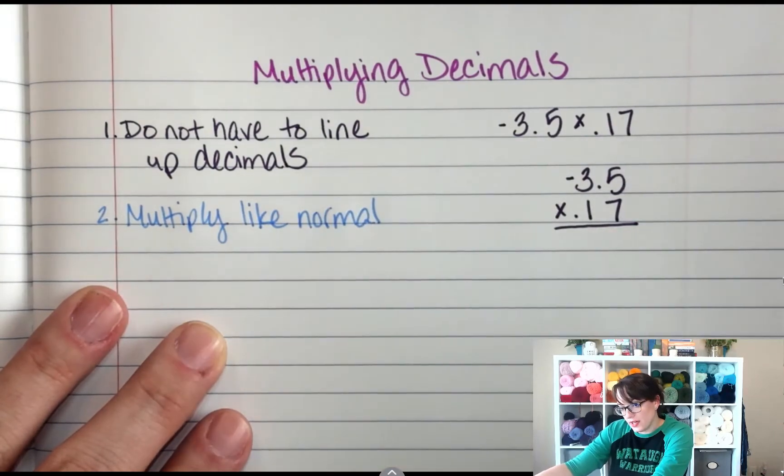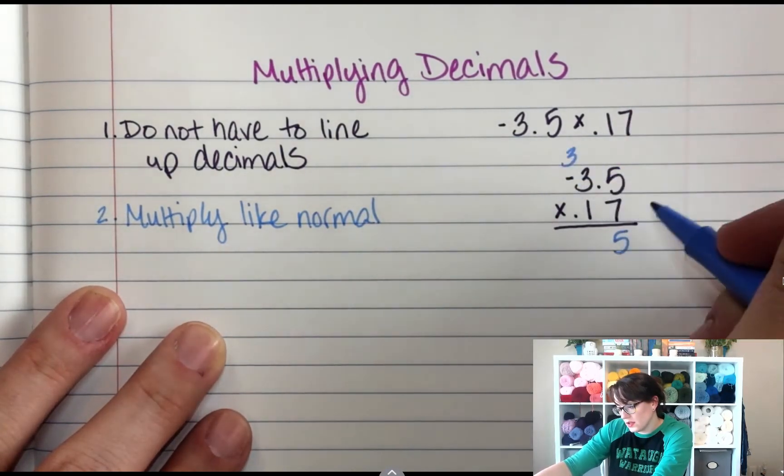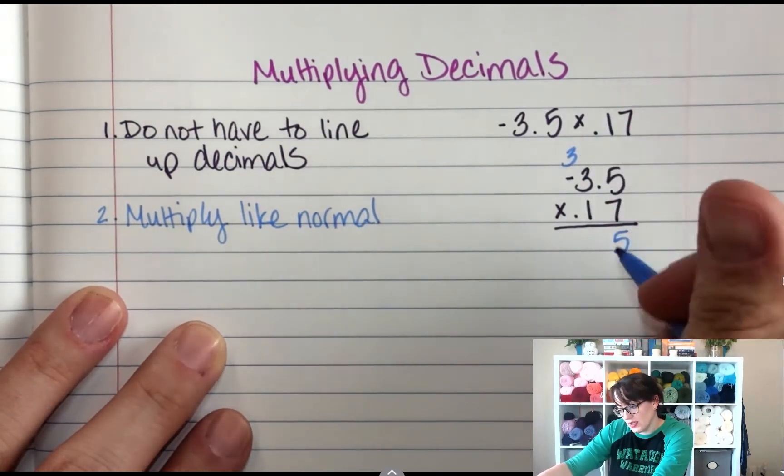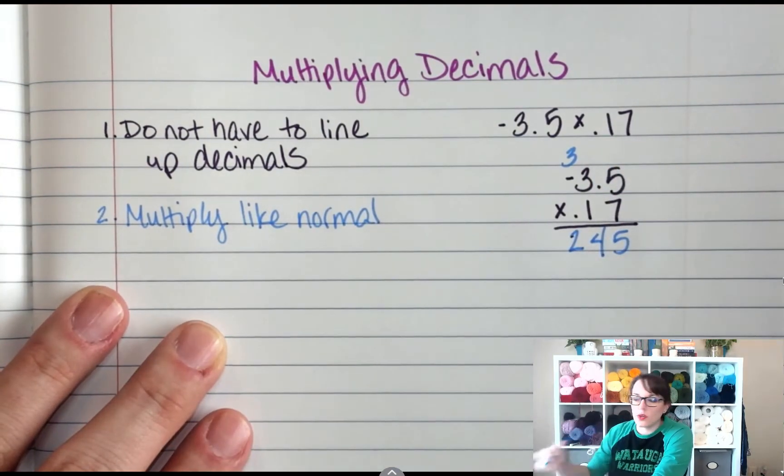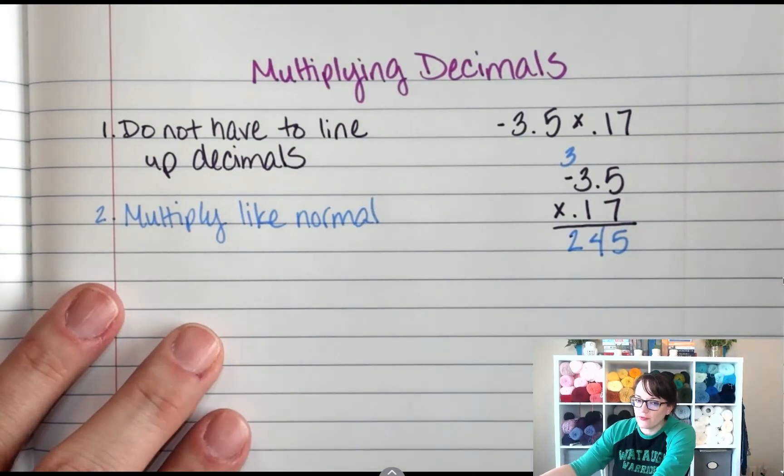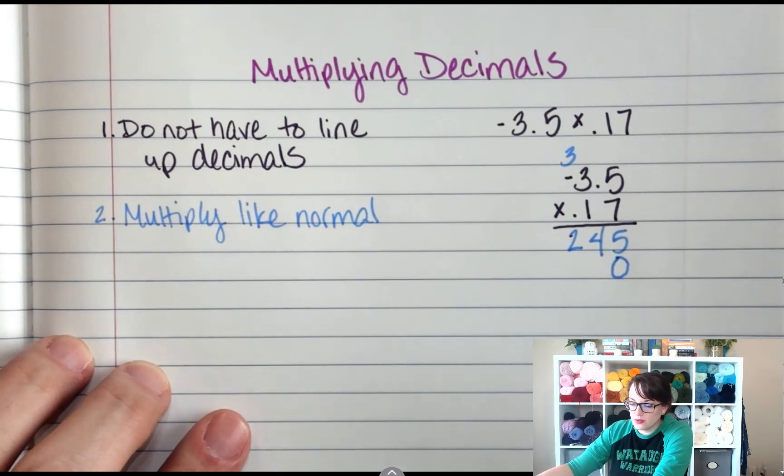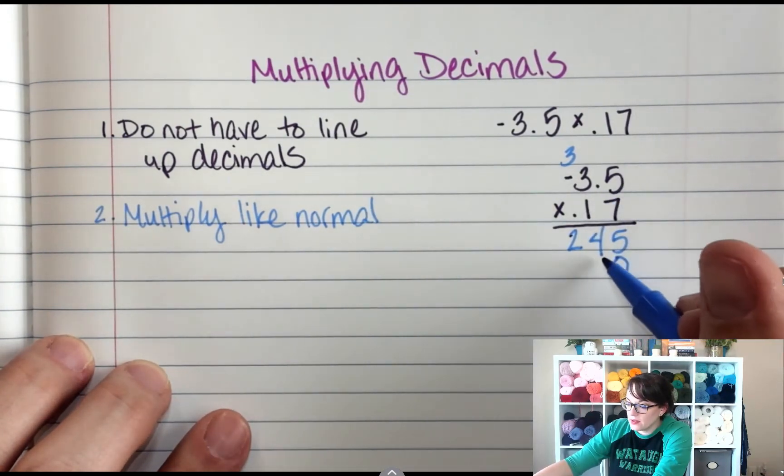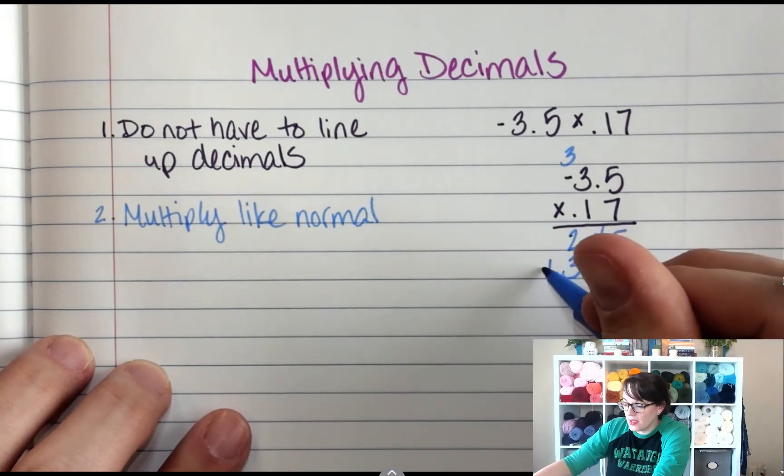So 7 times 5, 35. 7 times 3, plus 3 is 24. Then on my second row, what do I have to put underneath a 5? I have to put that placeholder 0. And now I do 1 times 5, 1 times 3, and I'm done. Well, I'm not done, but I'm done with this part.